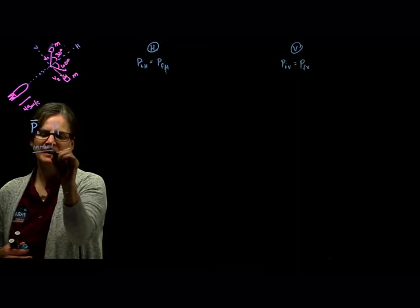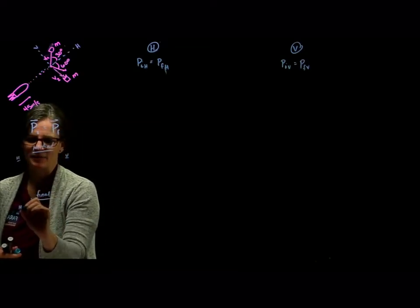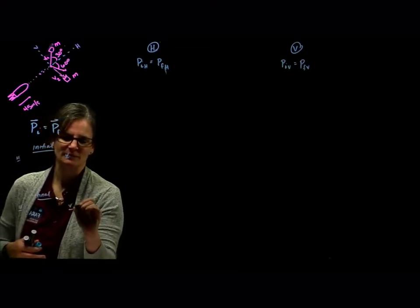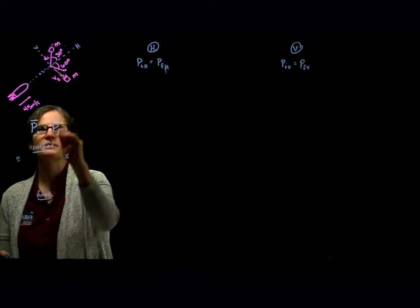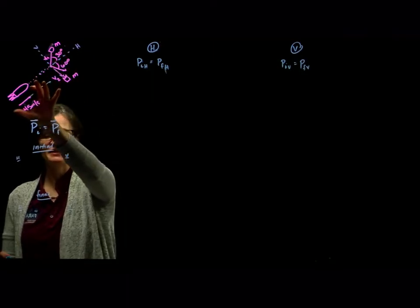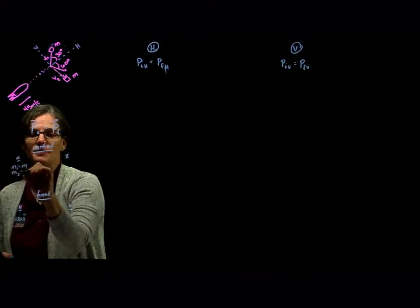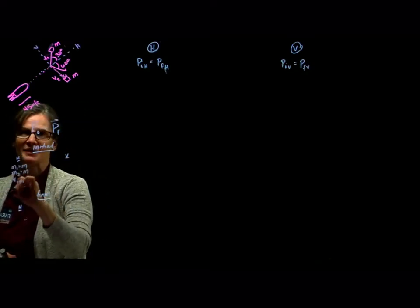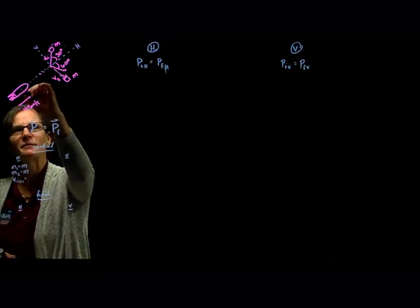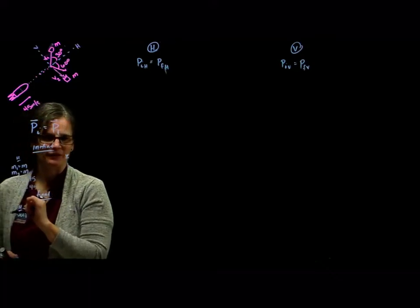We think about initial conditions and final conditions — what's happening initially horizontally and vertically. Initially the object is only moving in the horizontal direction. Mass 1 has a mass of m, and mass 2 also has a mass of m. The initial horizontal velocity for each piece is 45 m/s. Nothing is happening vertically — 0.